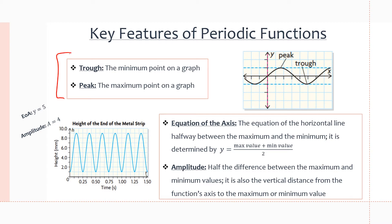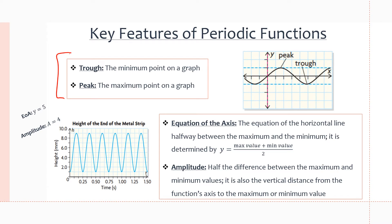Here are some key properties of periodic functions. First, we have a trough and a peak. A trough is the minimum point on the graph — the smallest y-value the graph touches. Looking at the graph, the trough touches the line y = −1, which is the lowest point. A peak is the maximum point, touching y = 1, which is the highest point the graph reaches. So the trough is the minimum and the peak is the maximum.